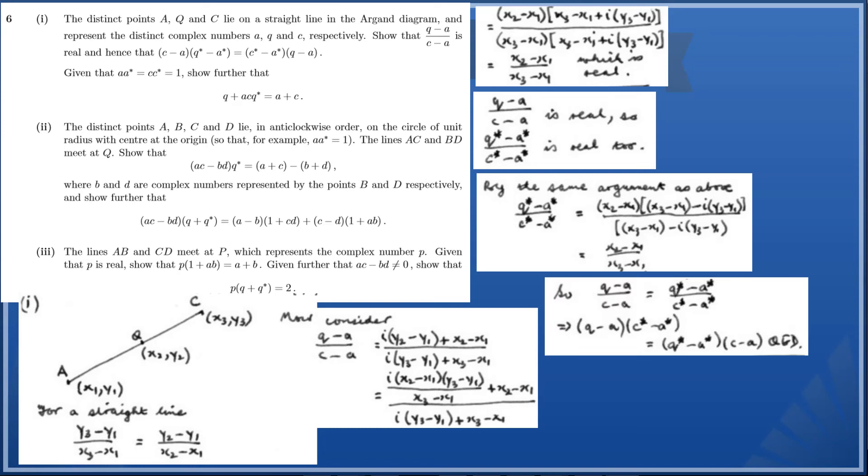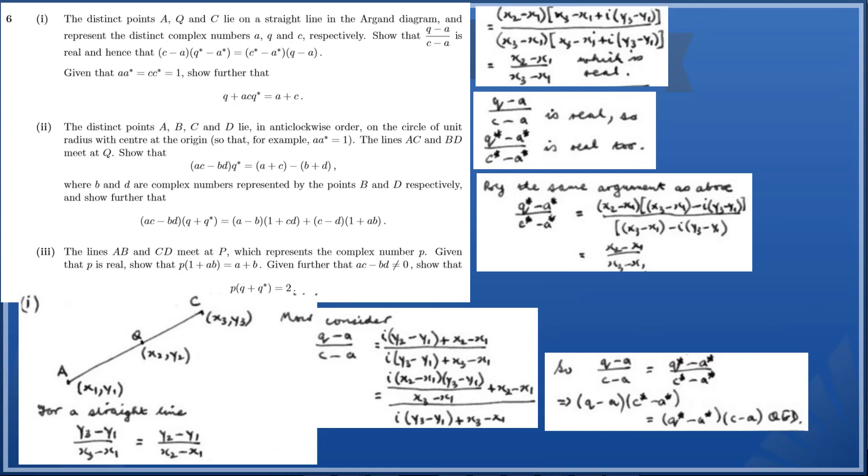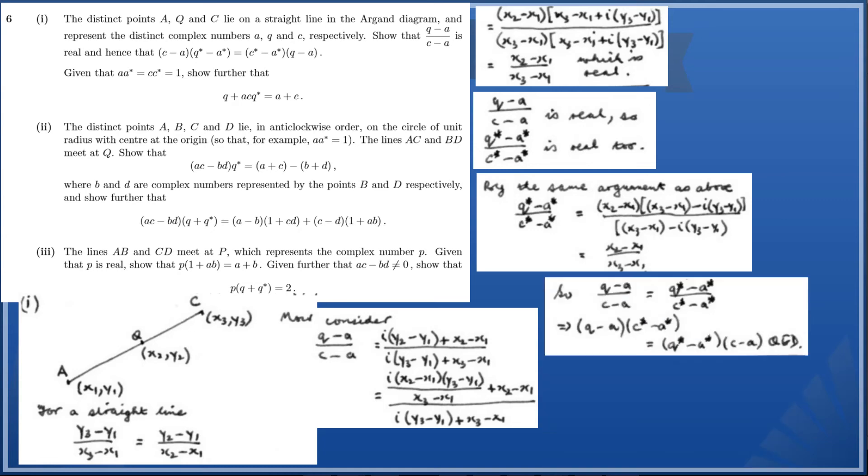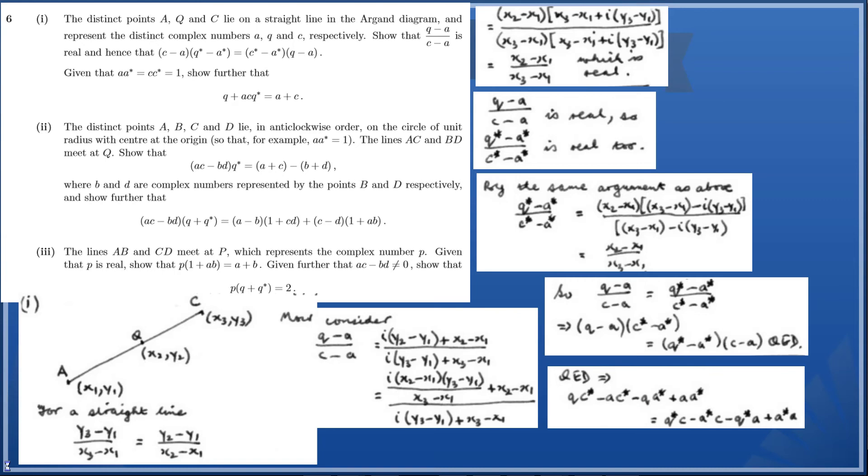Now what we can do is multiply out a common factor to get rid of the denominator on both sides, and there you have it, we have proven our next result. This of course implies that when we multiply out the brackets of the result which we've just proven, we have the following.